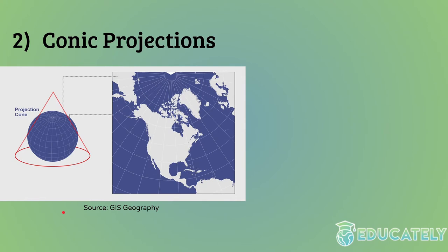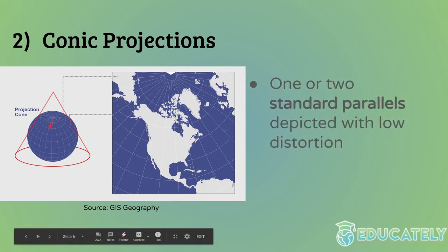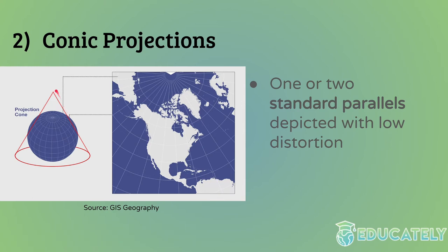Next up we have conic projections. Basically, it's similar to cylindrical projections except they're cast onto a cone shape. Imagine unfolding or casting everything from the spherical Earth onto the cone — it ends up being a bit like an ice cream shape, with a little divot, because it won't be a perfect rectangle like a cylindrical map. Conic projections have one or two standard parallels — the latitudes at which the sphere intersects the cone — and those are where you have the least distortion.